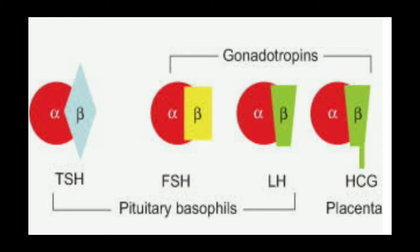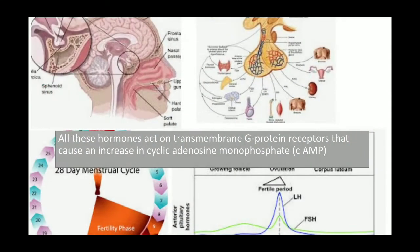hCG is released from the placenta, while TSH, FSH, and LH are all released from the pituitary. Analyzing their structure, we find that the alpha subunits are the same across all four hormones, but the difference lies in the beta subunit of each hormone.